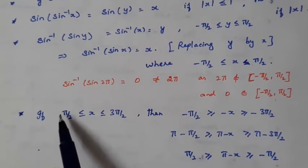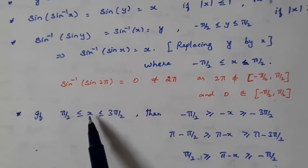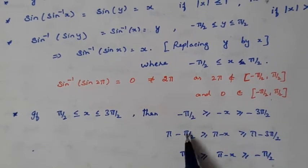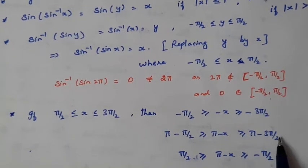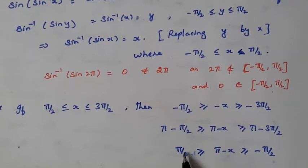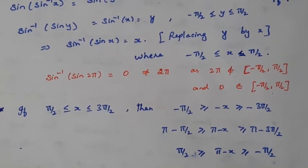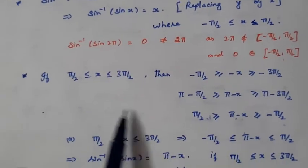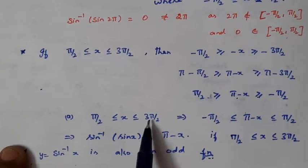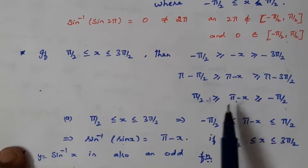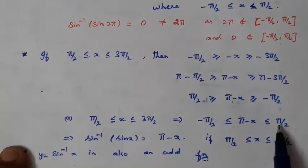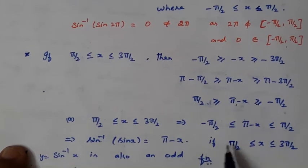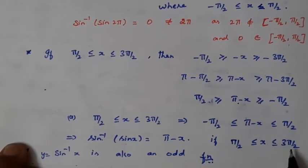If x lies in the next restricted domain π/2 to 3π/2, we can rewrite. Multiplying the principal domain inequality by −1 reverses it, then adding π to all parts: π − π/2 ≥ π − x ≥ π − 3π/2, simplifying to π/2 ≥ π − x ≥ −π/2, or equivalently −π/2 ≤ π − x ≤ π/2. So if x ∈ [π/2, 3π/2], then sin⁻¹(sin x) = π − x.